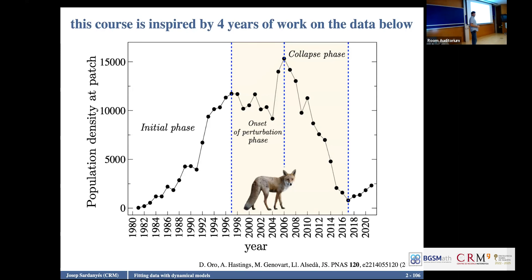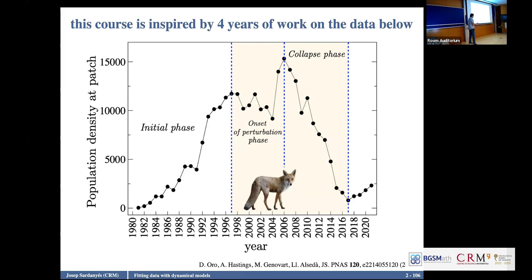We have been working on ecological data — the population of a colonial bird that inhabits the Delta de l'Ebre, in the south of Catalonia. This is a quite long ecological time series, because in ecology it's very difficult to get very long data — 20, 30, 40, even 100 years is very difficult. Some colleagues at a center in Blanes have been monitoring this bird population at Delta de l'Ebre since 1991, and they are still doing it, so we have about 40-something years of data.